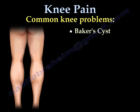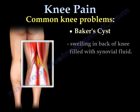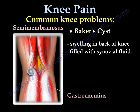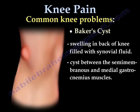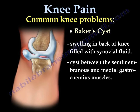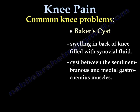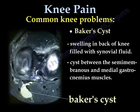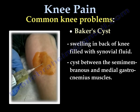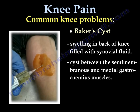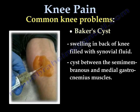Baker's cyst is a swelling in the back of the knee filled with synovial fluid. It is usually located between the semimembranosus and the medial gastrocnemius. Here is an example of an axial MRI cut showing the Baker's cyst in the back of the knee, as well as a video demonstrating aspiration of the Baker's cyst.